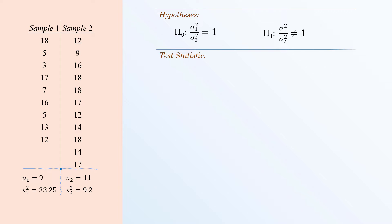The test statistic is simply an F-ratio of the two sample variances. The farther this ratio is from 1, the greater the evidence of a significant difference between the two population variances.